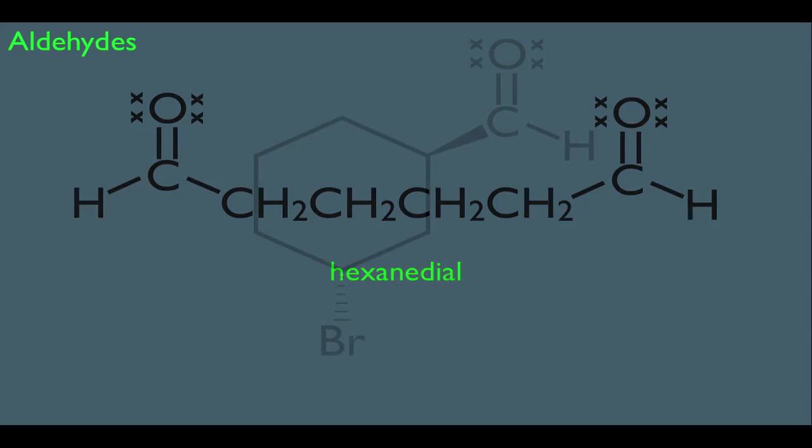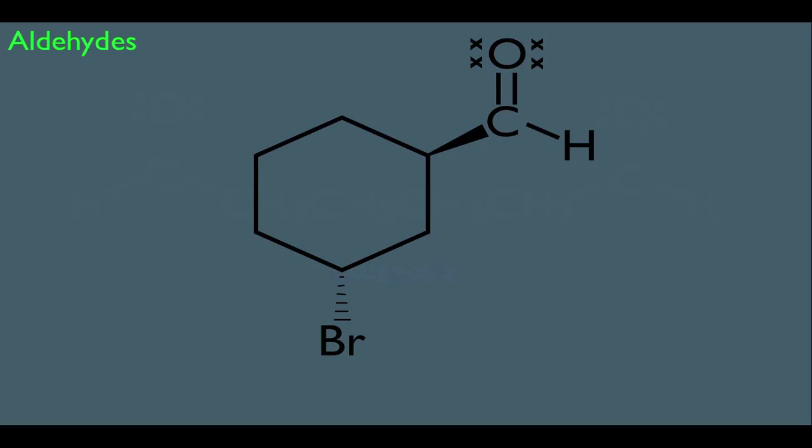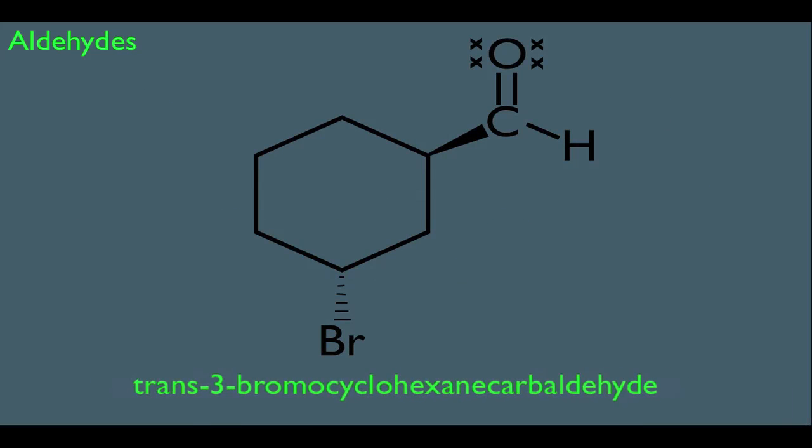What about cyclic structures? If you have an aldehyde on a ring, the name of this molecule is trans-3-bromocyclohexanecarbaldehyde. The aldehyde takes priority, so it must be carbon 1 on the cyclohexane ring. Numbering clockwise puts the bromine on carbon 3 within the ring, hence 3-bromo. We add the prefix trans to denote that the aldehyde and the bromine are trans to each other.